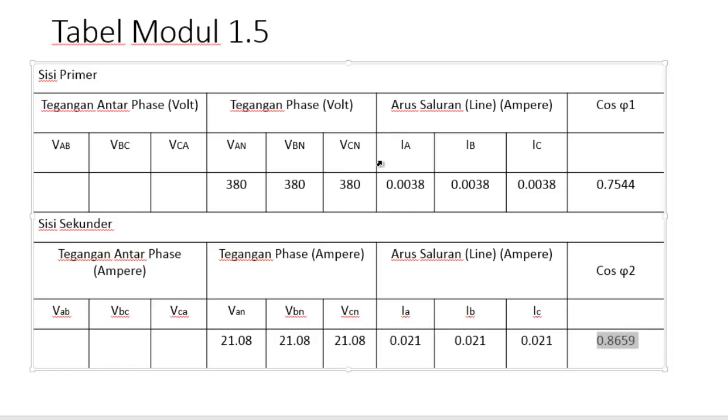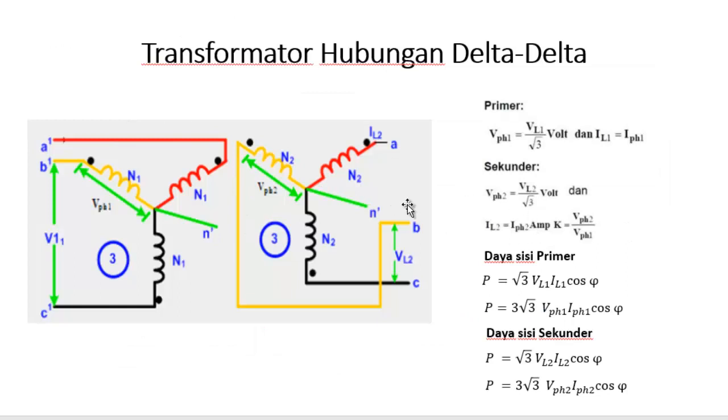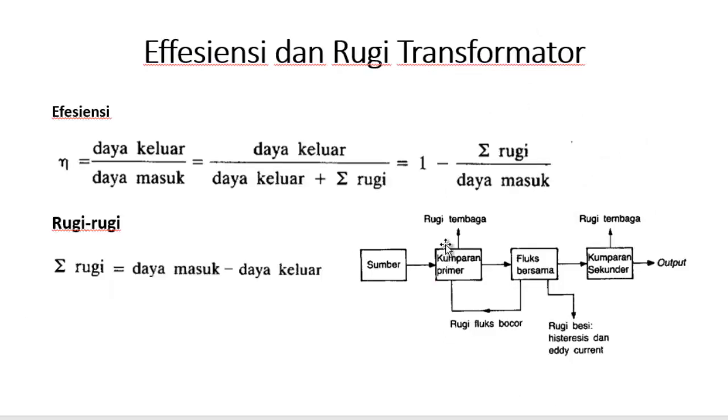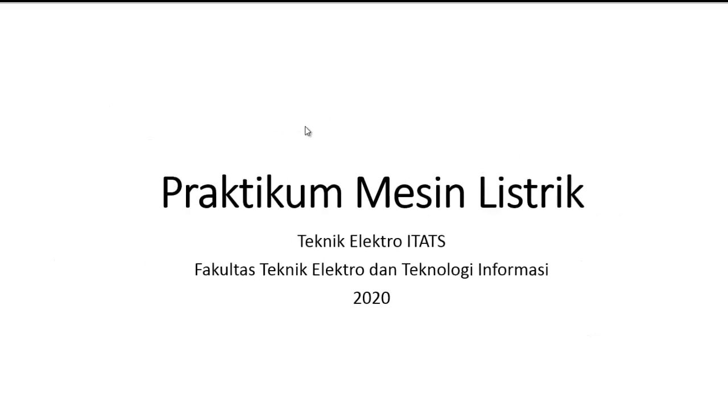Setelah sudah mendapatkan nilai-nilai ini maka selanjutnya dianalisa mencari dayanya, daya nyata yang terdapat di dalam sisi primer maupun sisi sekunder, dan lewat itu nanti bisa diketahui nilai dari efisiensi dan nilai rugi-rugi tegangan dengan menggunakan persamaan untuk hubung bintang-bintang. Nanti bisa diperoleh nilai dayanya di sekunder sama primer, selanjutnya lewat itu pula nanti bisa dilihat dari efisiensi sekaligus total rugi yang terdapat di dalam trafo tersebut. Baik, itulah modul 1.5 mengenai trafo 3 fase hubung bintang-bintang. Atas perhatiannya saya sampaikan terima kasih.